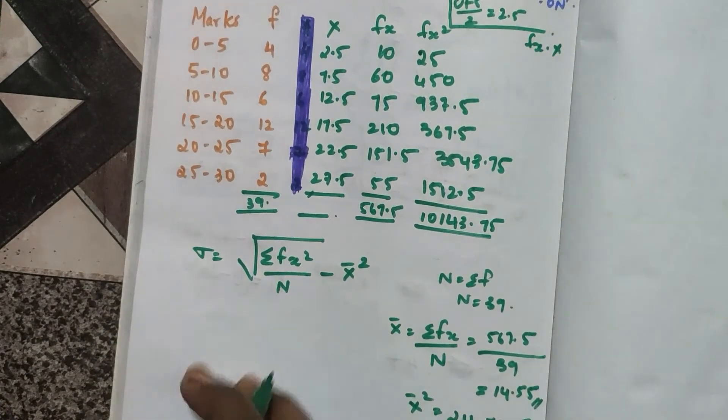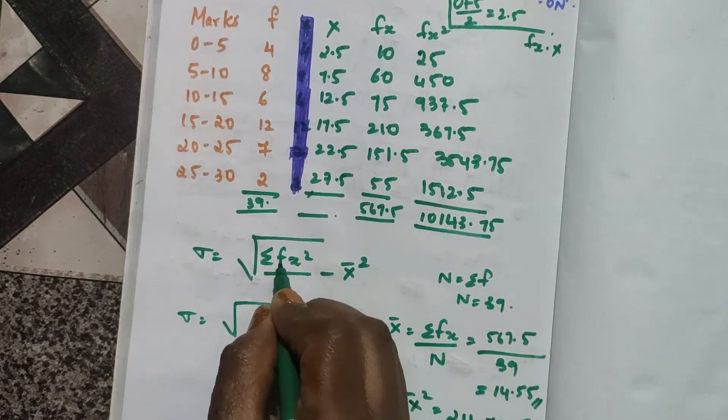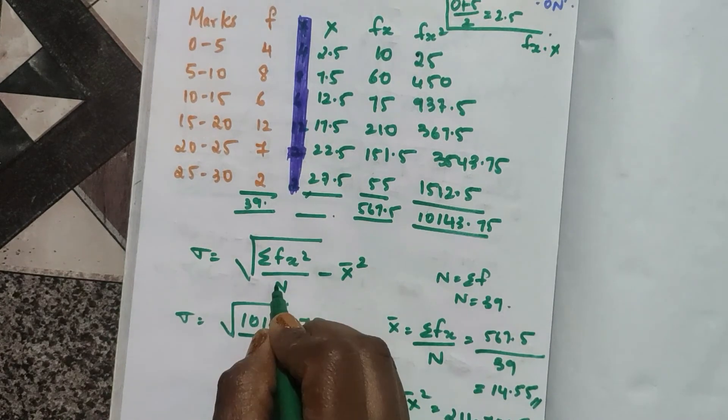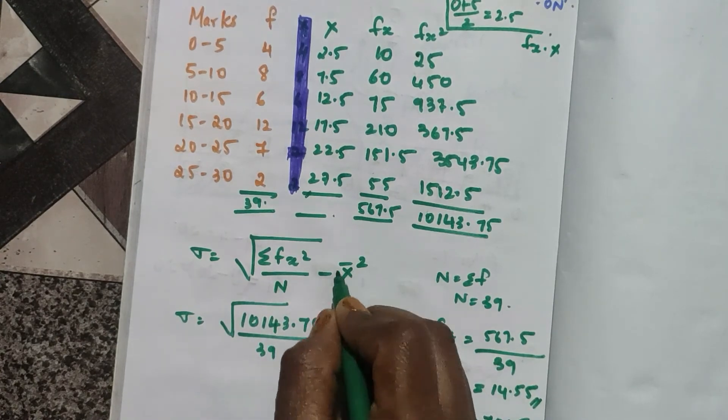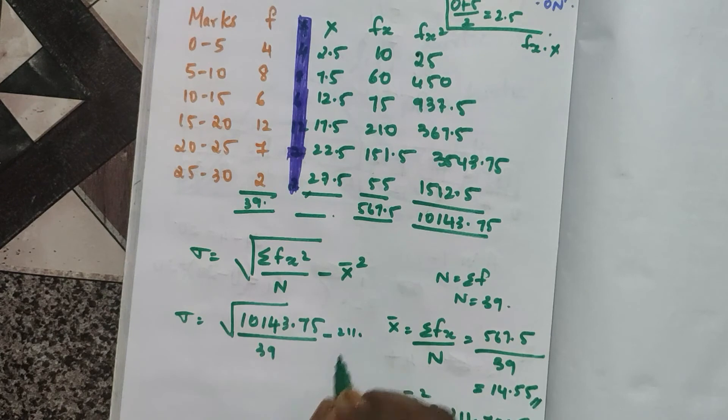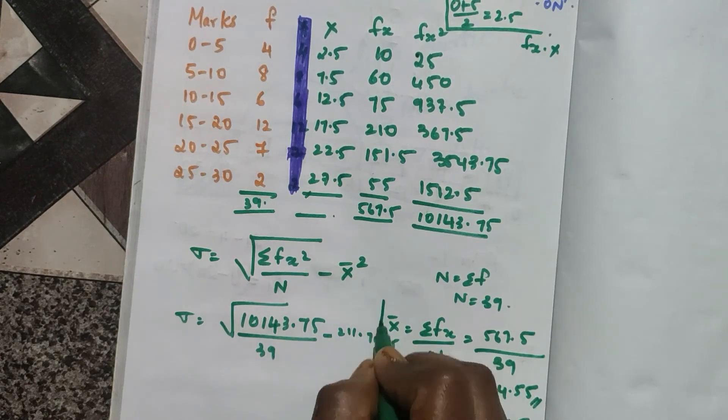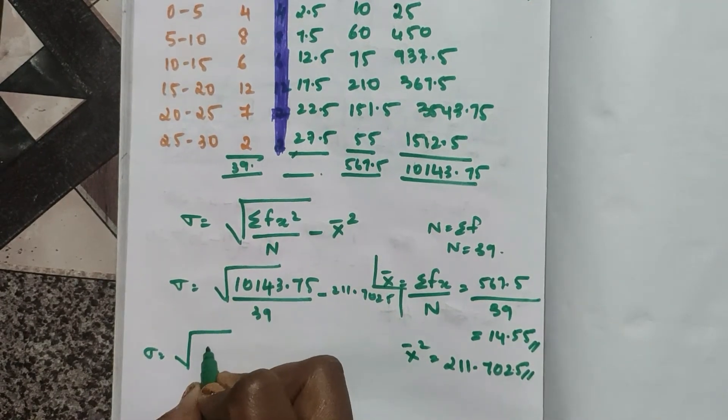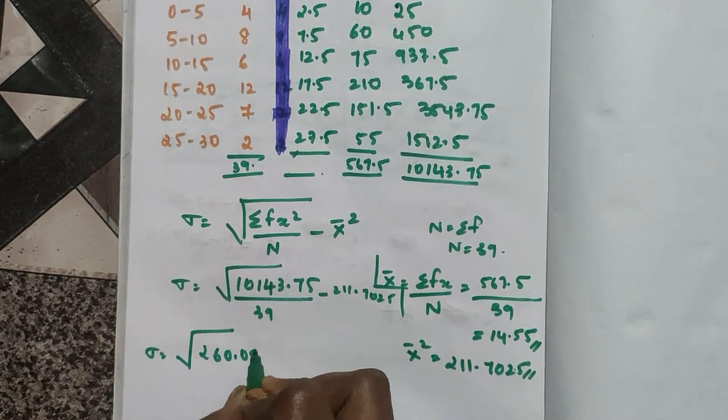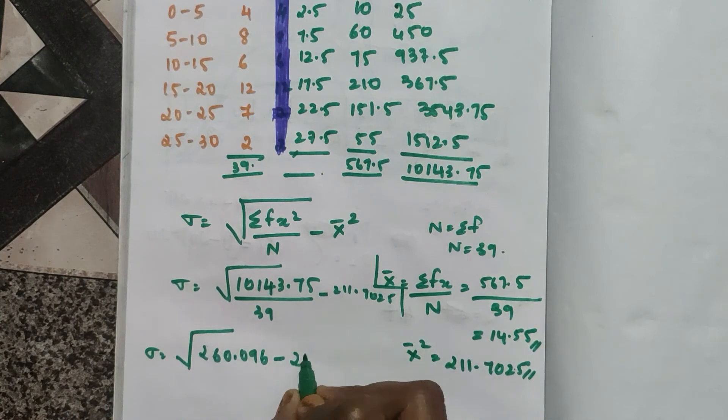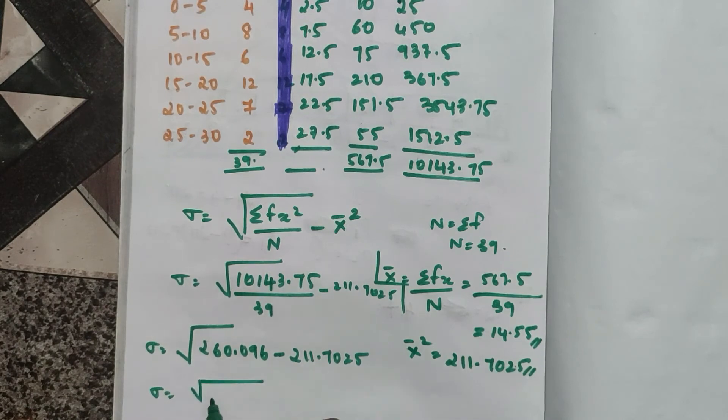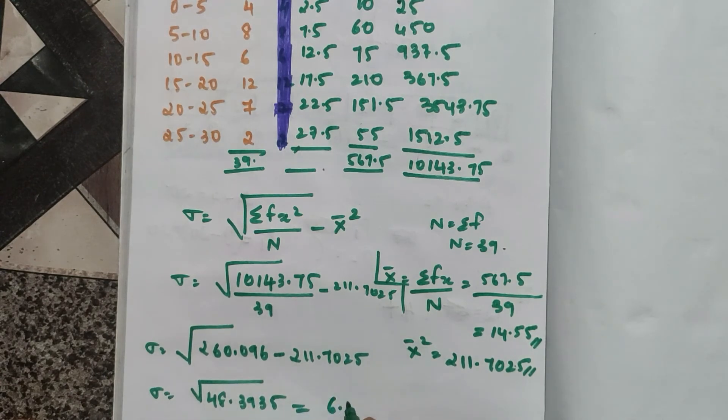Now we substitute in the formula. Summation fx square, the value is 10,143.75 divided by n which is 39, minus x bar value that is 211.7025. So divide this, you get 260.096, minus this value. After subtracting I get 48.3935. If I find the root for this I get 6.95.